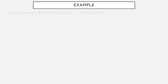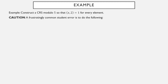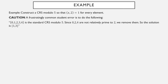Let's take some example problems. Construct a complete residue system modulo 5 so that every element is relatively prime to 2. A very frustrating student error is the following: 0 through 4 is the standard CRS mod 5, but 0, 2, and 4 are not relatively prime to 2. So some students remove those and are left with the set {1, 3}. Now this is a set of elements relatively prime to 2, but it only has two elements — a complete residue system mod 5 must have five elements. So this is definitely not a complete residue system modulo 5.